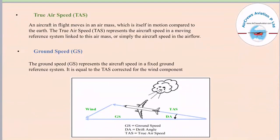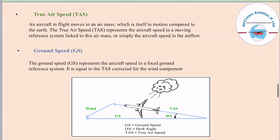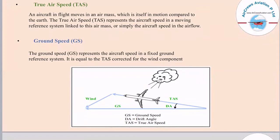Third is true airspeed. An aircraft in flight moves in an air mass which is itself in motion relative to the earth. True airspeed represents the aircraft's speed in a moving reference system linked to the air mass — the aircraft's speed in the airflow. Ground speed represents the aircraft's speed in a fixed ground reference system and is equal to the true airspeed corrected for the wind component. The angle formed between ground speed and true airspeed is known as the drift angle.